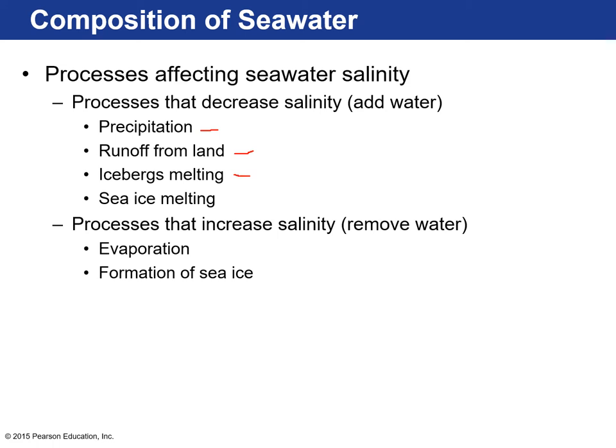Sea ice forms at really high latitudes where it gets cold enough that the ocean essentially freezes. When seawater freezes, only the water freezes — it doesn't include the dissolved solids. So the sea ice that forms is pure water, and as it melts it adds more fresh water into the ocean, lowering salinity.